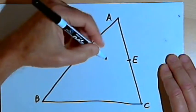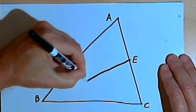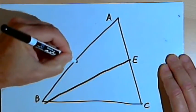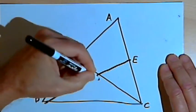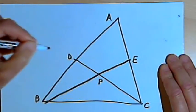And I'll make two medians. I'll connect point E and B, and I'll connect points D and C. So the place where they intersect, the centroid, I'm going to label that as point P.